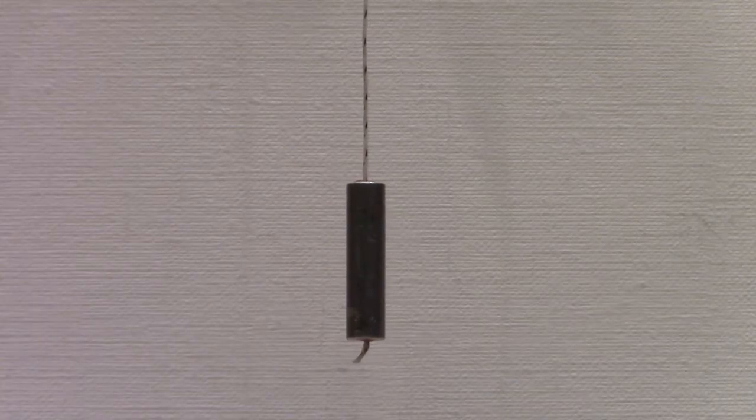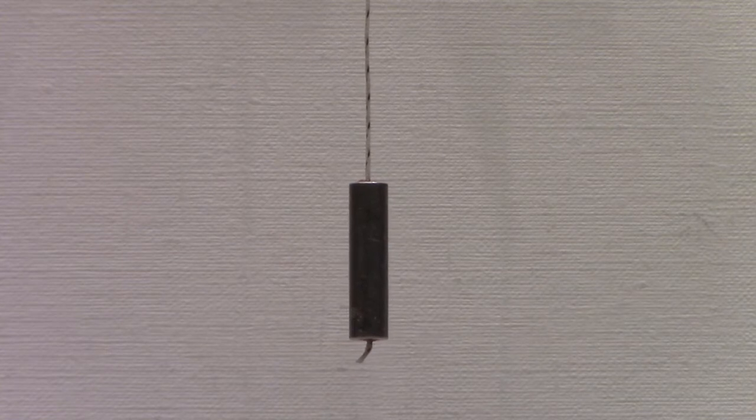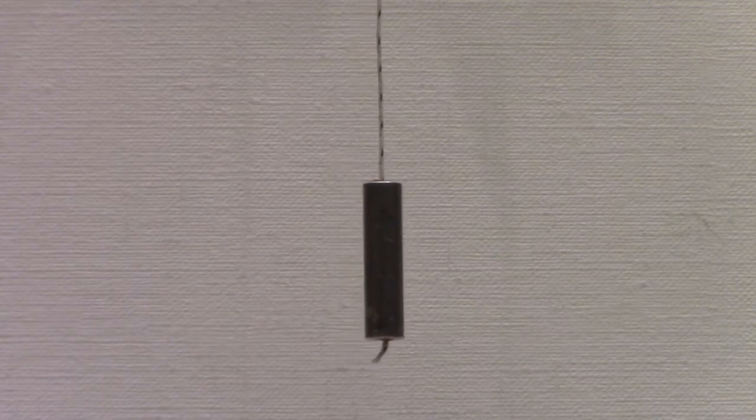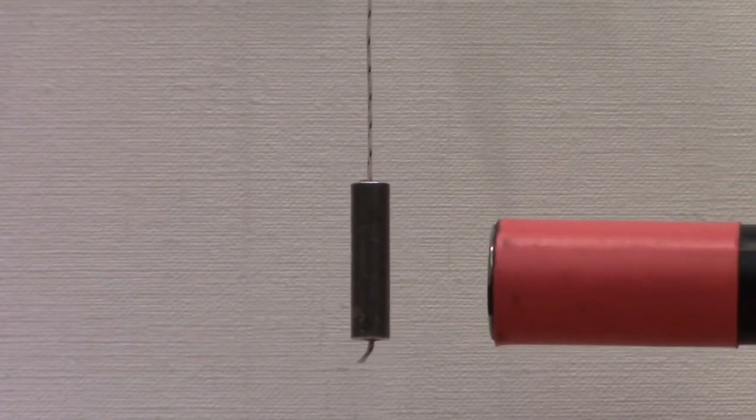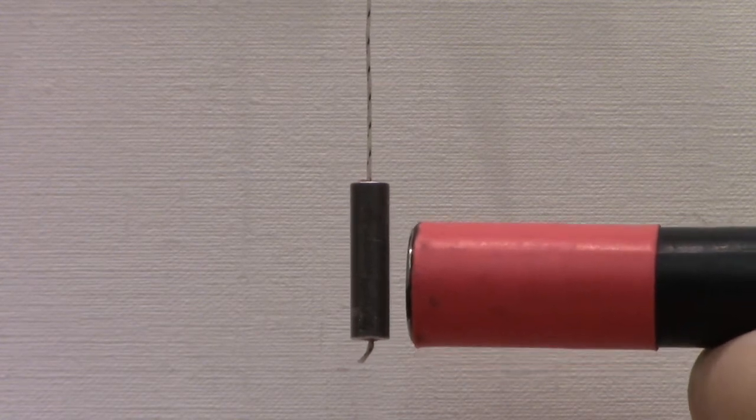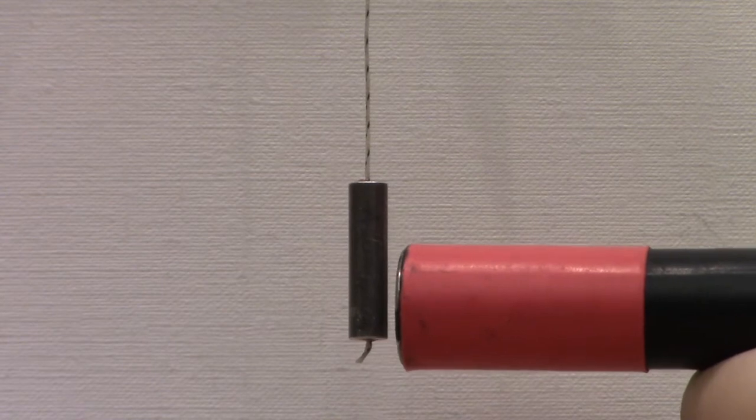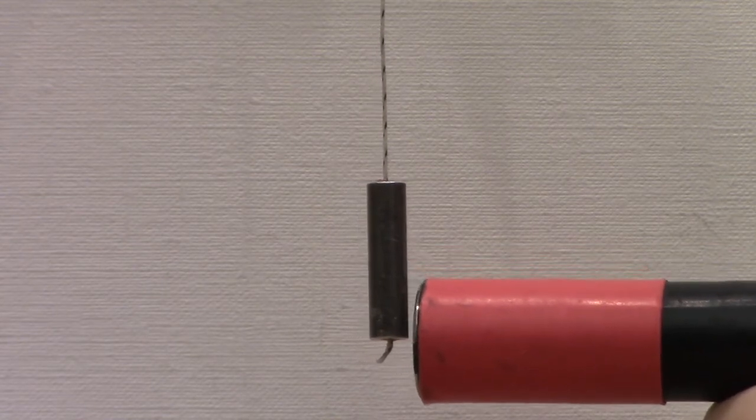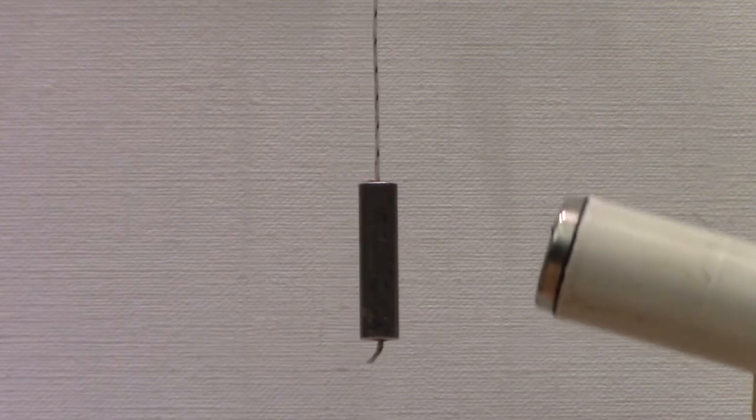Here we have a small piece of aluminum hanging from a string. You might think aluminum doesn't react to magnetic fields, but it is in fact paramagnetic. So it is very slightly attracted to this permanent magnet.